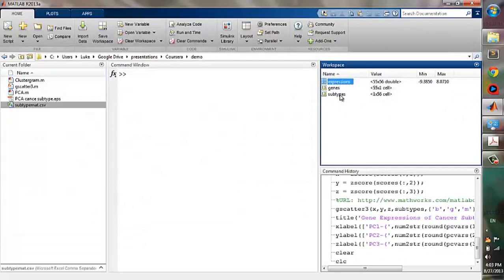Okay, now in our workspace, we have three variables: expressions, genes, and subtypes. Clustergram is quite easy in MATLAB because it is only one single function. You just need to specify all its properties, so this function has many input arguments.